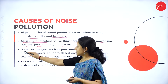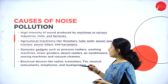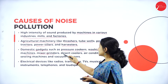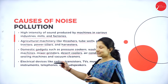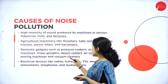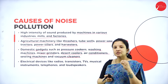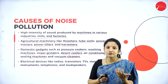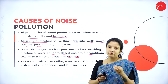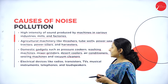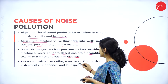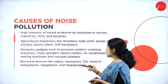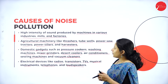Domestic gadgets used in houses — common ones such as pressure cookers, washing machines, mixer grinders, desert coolers, air conditioners, sieving machines, and vacuum cleaners — can all cause noise pollution. We might not feel irritated because we get used to the sound, but they are all noise pollutants. Electrical devices such as radios, transistors, TVs, musical instruments, telephones, and loudspeakers can also cause noise pollution.